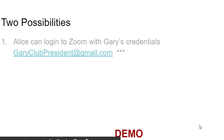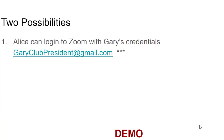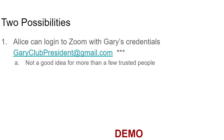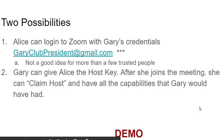There are two possibilities. One, Alice can log in to Zoom with Gary's credentials, but that's not really a good idea for more than just a couple of trusted people. The second option is Gary can give Alice the host key. After she joins the meeting, she can claim host and have all the capabilities that Gary would have had. So let me show you what I mean.